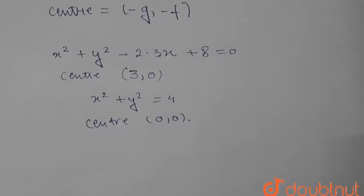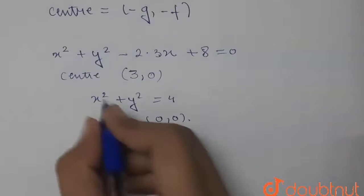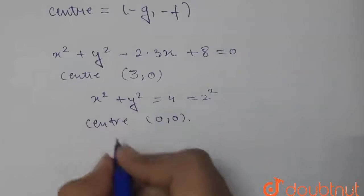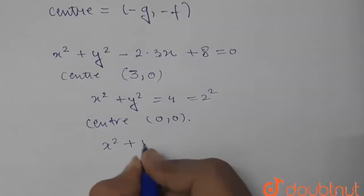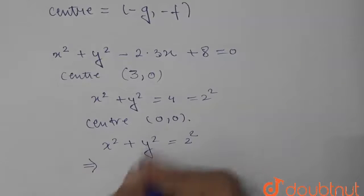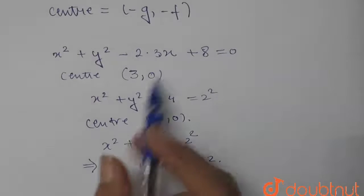Now if we talk about the radius, its radius will be what? See, this can be written as 2². 4 can be written as 2², so this is equal to x² + y² = 2². This implies that its radius is 2.